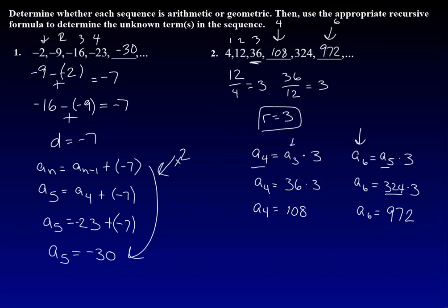I do the same thing with a sub 6. It equals a sub 5, which is the previous term. A sub 5 was 324. I times that by 3 and I got 972.